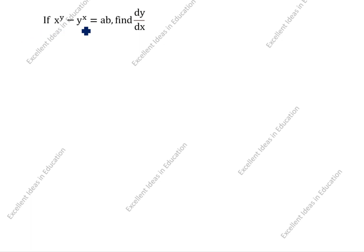Hi friends, welcome to my channel, Excellent Ideas in Education. Today we are going to solve this differentiation problem. This is a very important problem. If x power y minus y power x is equal to 80, find dy by dx. We will differentiate with respect to x in this question. We will solve this question using a shortcut trick method.